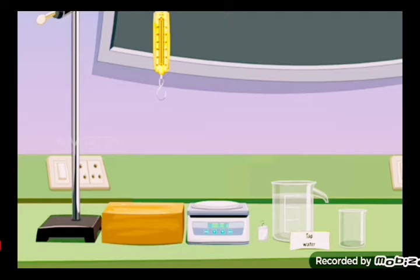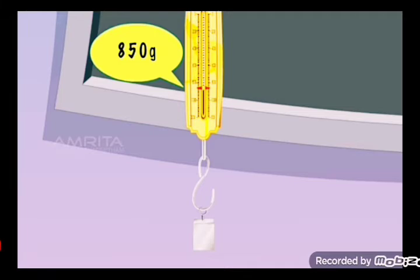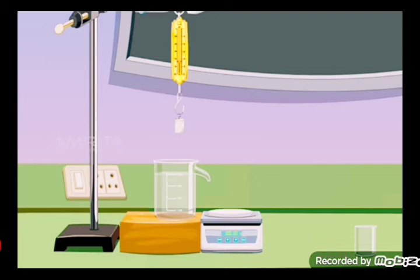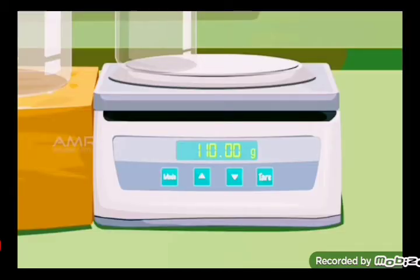The spring balance is hung on the iron stand. Take the iron block and hang it on the spring balance. Weight of the iron block is displayed as 850 gram. Place the overflow can with tap water on wooden base. Place the empty beaker on the weighing balance. Note down the weight on the balance.